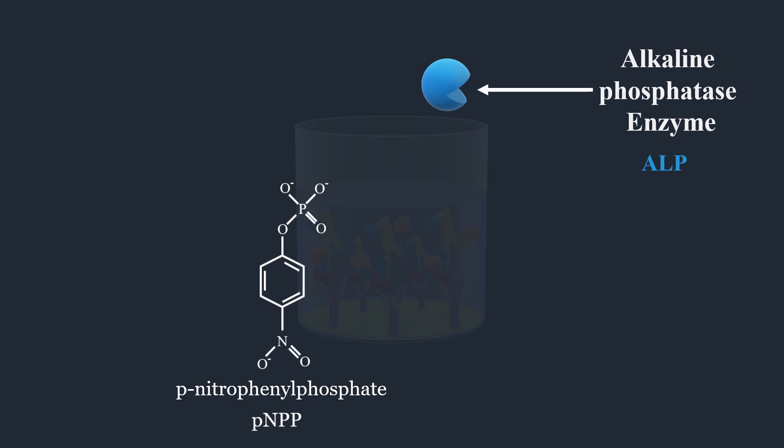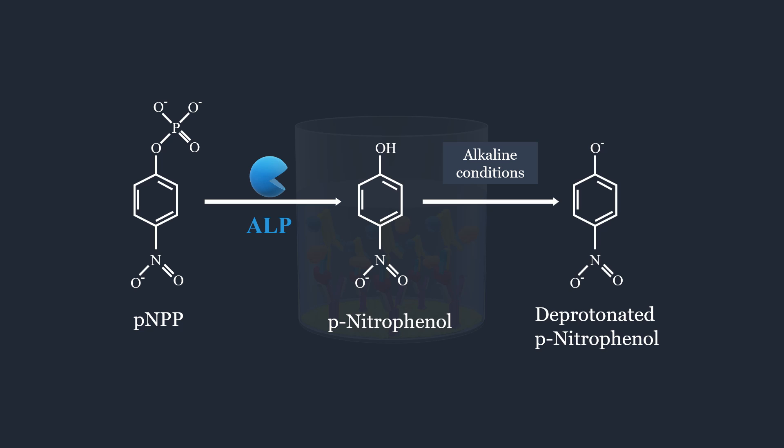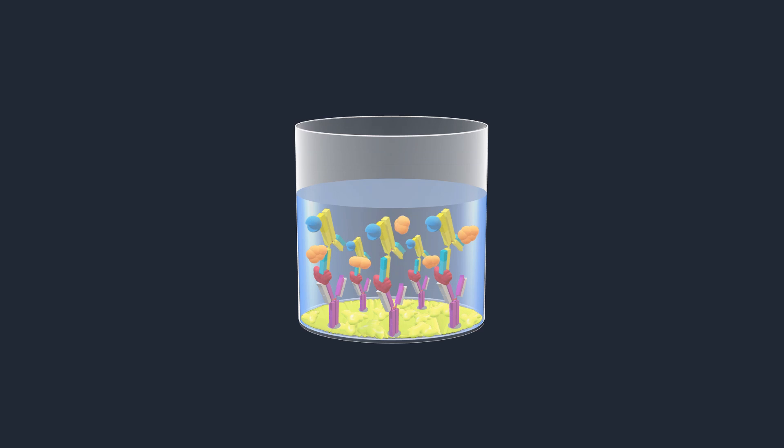The alkaline phosphatase enzyme catalyzes the cleavage of phosphate groups from PNPP molecules. This enzymatic reaction transforms PNPP into P-nitrophenyl, which generates a yellow color upon deprotonation in an alkaline medium. In the presence of TSH, a color change takes place, causing the wells to display a yellow color.